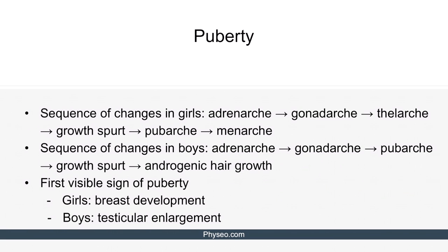Now let's talk about the sequence of changes during puberty. In girls, adrenarchy is followed by gonadarchy, telarchy, growth spurt, pubarche, and finally menarche.